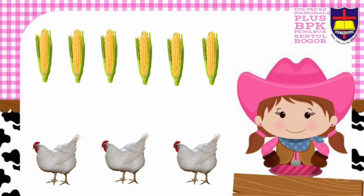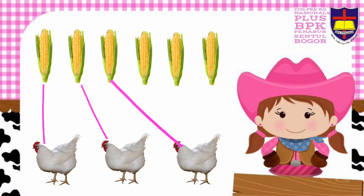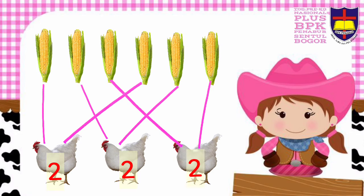Look at the picture. There are six corns and three chickens. Let's draw lines to share six corn between three chickens. Are you ready? Let's start. Now let's count — how many corns for each chicken? Yes, there are two corns for each chicken.